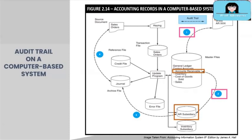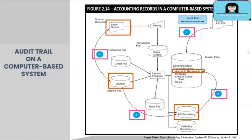Next, if you want to know the detailed transactions for accounts receivable, you need to examine the archived sales journal. Finally, if you need to vouch the supporting documents for each of the sales transactions, you can pull up the sales orders or sales invoices. Notice the flow shown by the arrows — this represents the audit trail from financial statements to supporting documents.